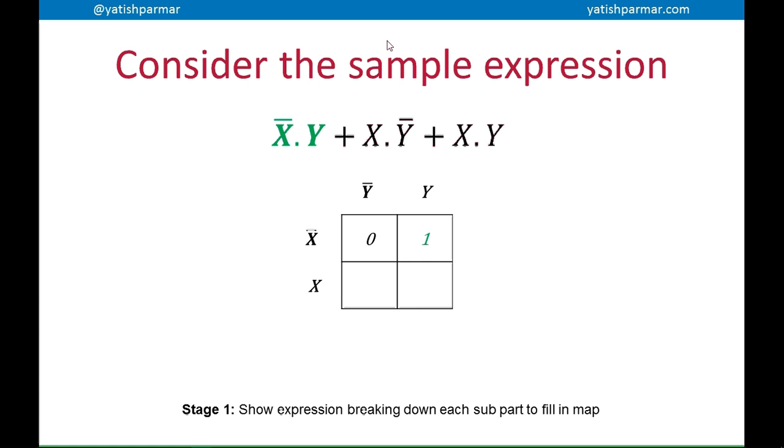Next, if we look at not x and y, that's obviously in our expression producing a true output. So therefore, we put a 1 into that coordinate in the K-map. And then if we look at the second part, x and not y gives us a 1. And then the final part, x and y, gives us a 1 as well. So that's stage 1, breaking down each sub-part and then filling in the map based on what the output of that part of the expression would be.